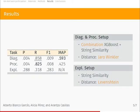Our best system for the diagnostic and procedure subtasks is a combination of XGBoost and Jaro-Winkler string similarity outputs. This combination obtained the highest MAP for the diagnostic subtask, 0.59, while we also got the second best recall result, 0.85. For the procedure subtask, the system also got the best recall, 0.82, and a moderate precision, which led to a MAP of 0.42, somewhat below the results for diagnostics, which is the general trend.